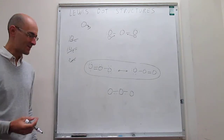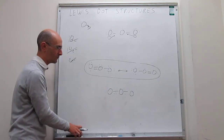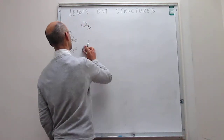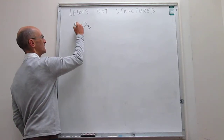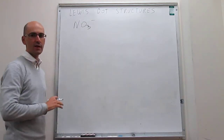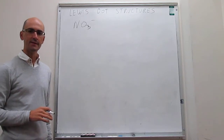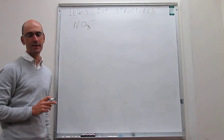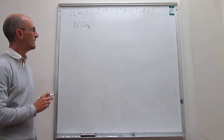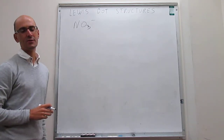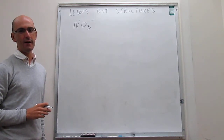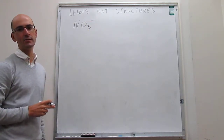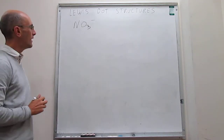Let's do one more example: the nitrate ion. Nitrate is a polyatomic ion with the formula NO3⁻. Each of the oxygens has six valence electrons, giving 18. Nitrogen has the configuration 2s2 2p3, so that is five valence electrons. Five plus eighteen is twenty-three, and then the one negative charge adds one electron, for a total of twenty-four valence electrons.